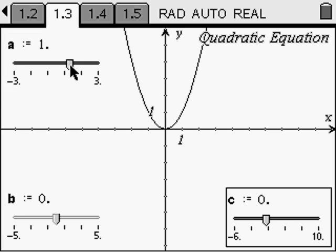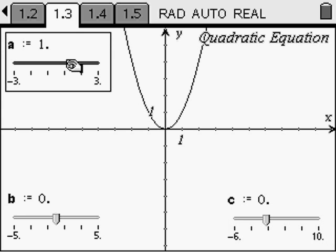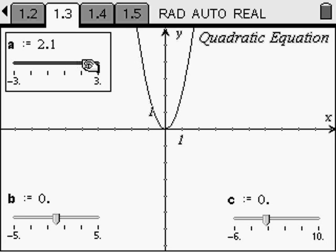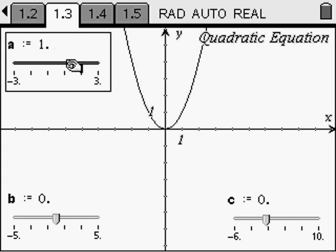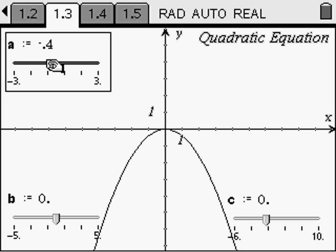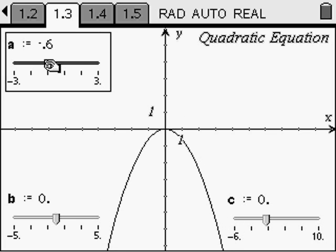Here the value of a is now one, but when we make it larger, we see that the graph is getting more and more narrow as the number increases. And when it is negative, it opens downward. And we see that we have the frowny face quadratic equation because the coefficient a is negative.